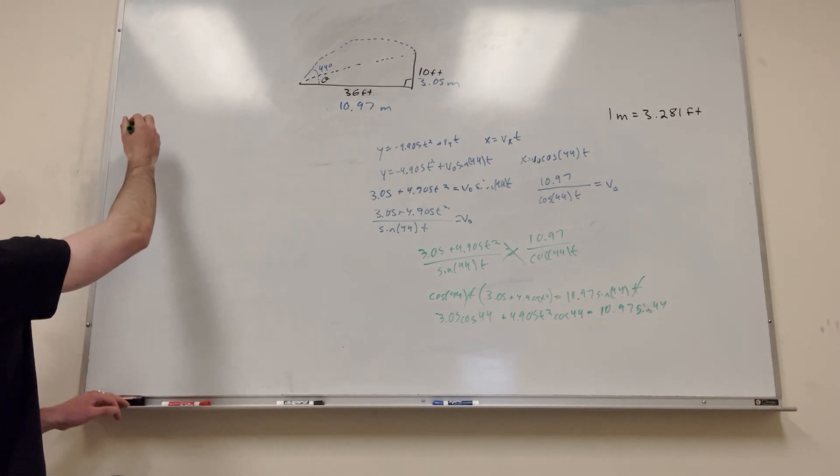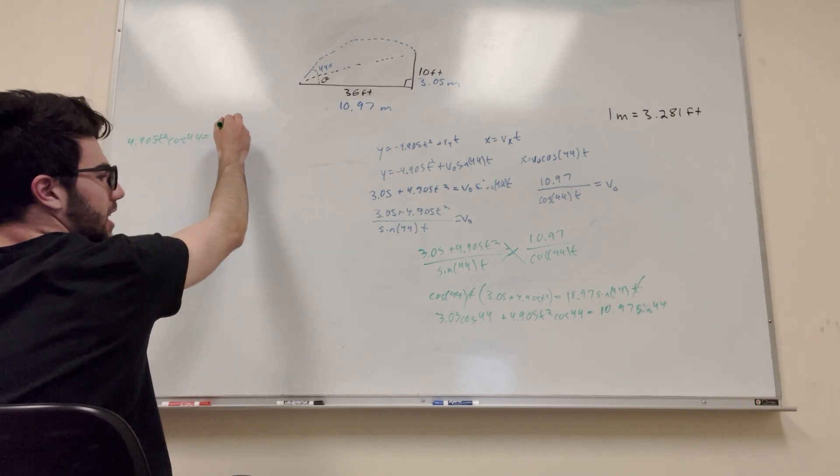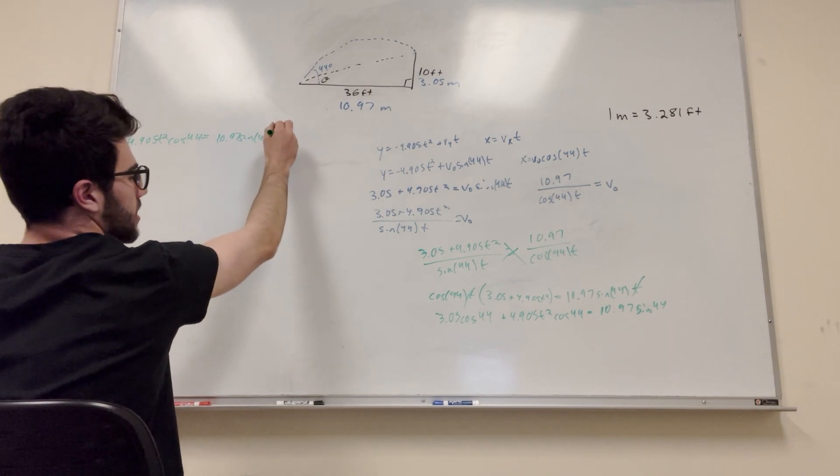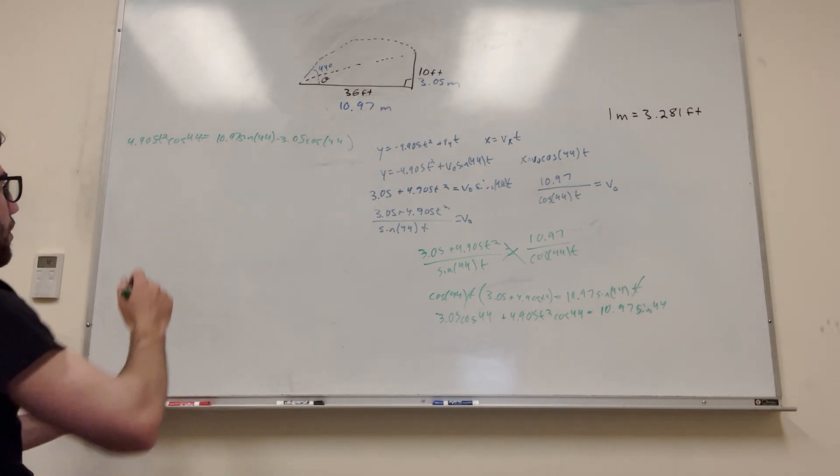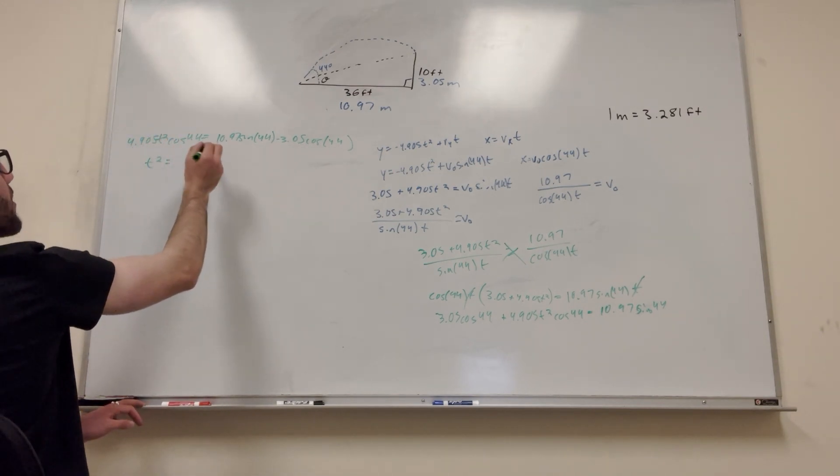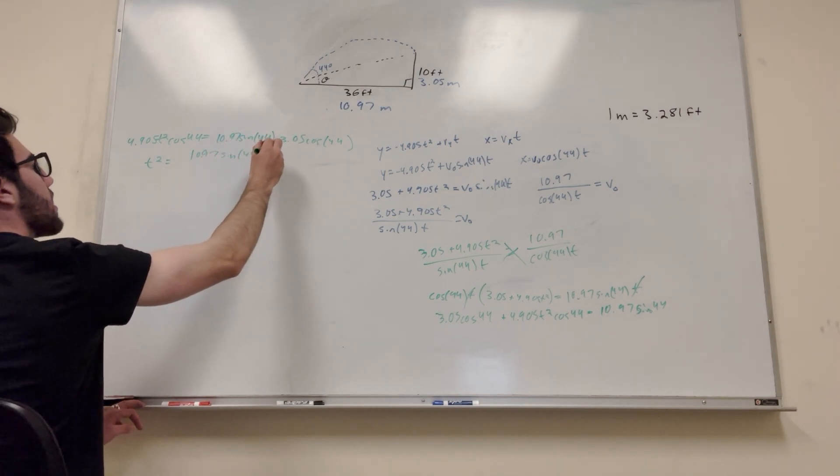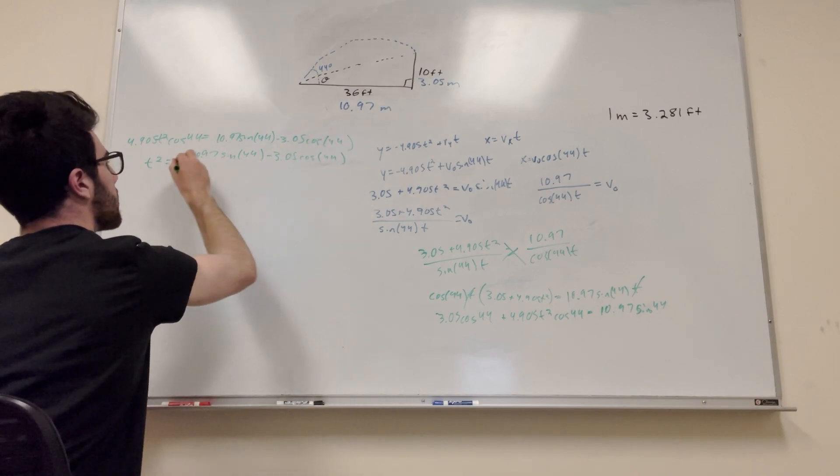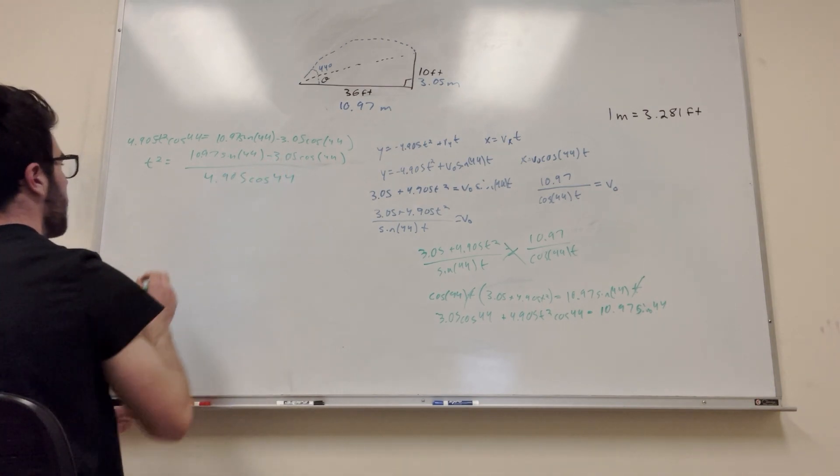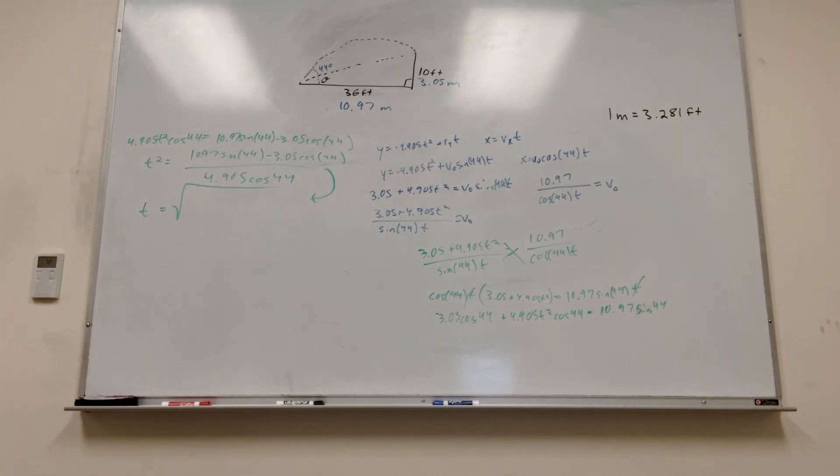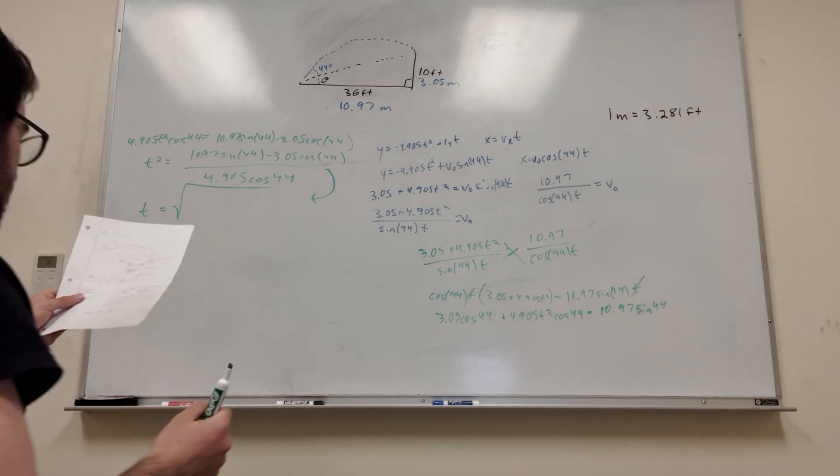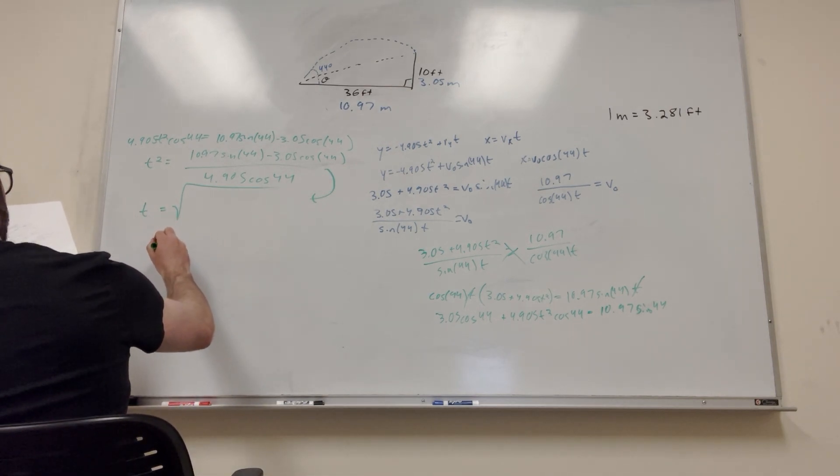More work. My arm is getting worked out for sure. 4.905 T squared cosine 44 is equal to 10.97 sine of 44 minus 3.05 cosine of 44. And then all we have to do is divide by 4.905 cosine of 44 to get T squared by itself. 10.97 sine of 44 minus 3.05 cosine of 44 divided by 4.905 cosine of 44. And then if we take the square root of this, let's see what you get. That makes sense. That's just going to give you T is equal to 1.24.